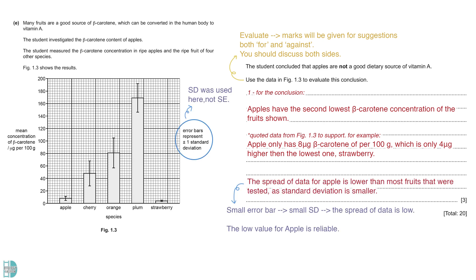The data for apples have a smaller standard deviation compared to the three other fruits in the bar chart. The graph uses standard deviation to plot the error bar, not standard error. A small standard deviation shows that the spread of data for apple is low. This means the low value of apple is reliable.